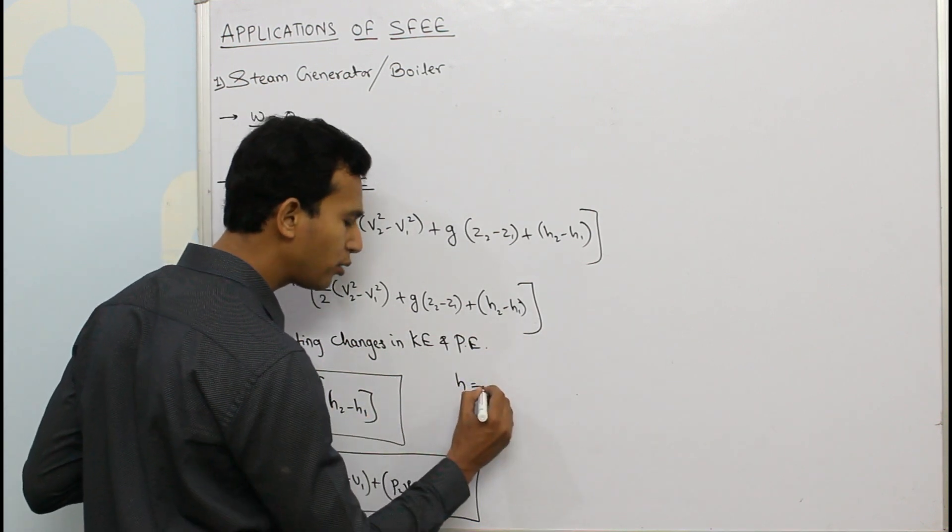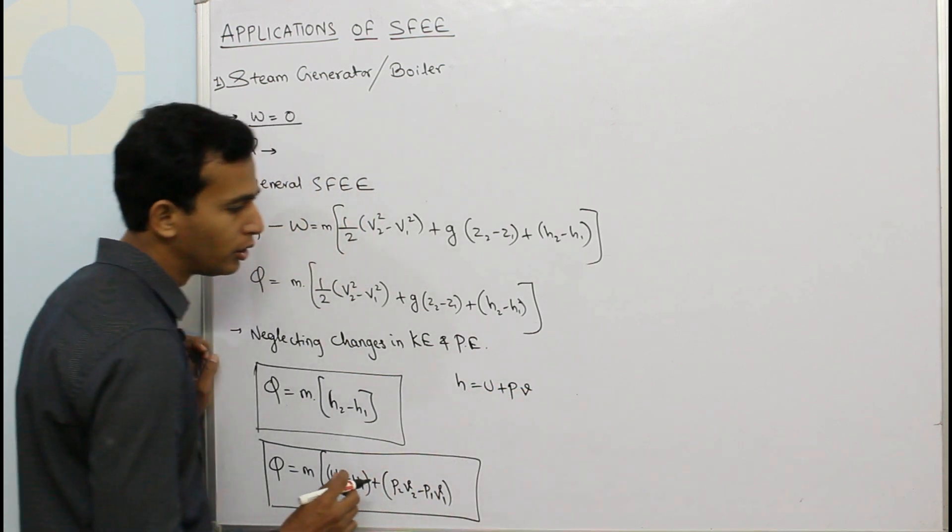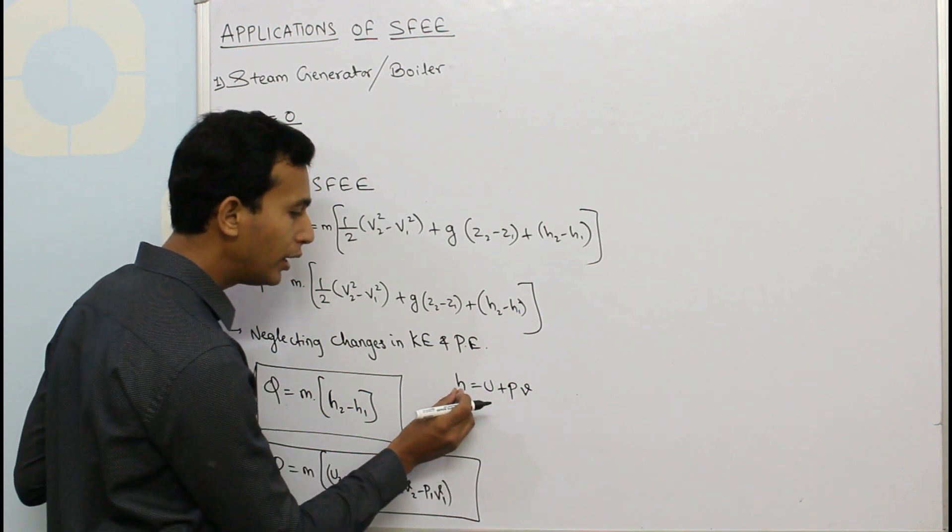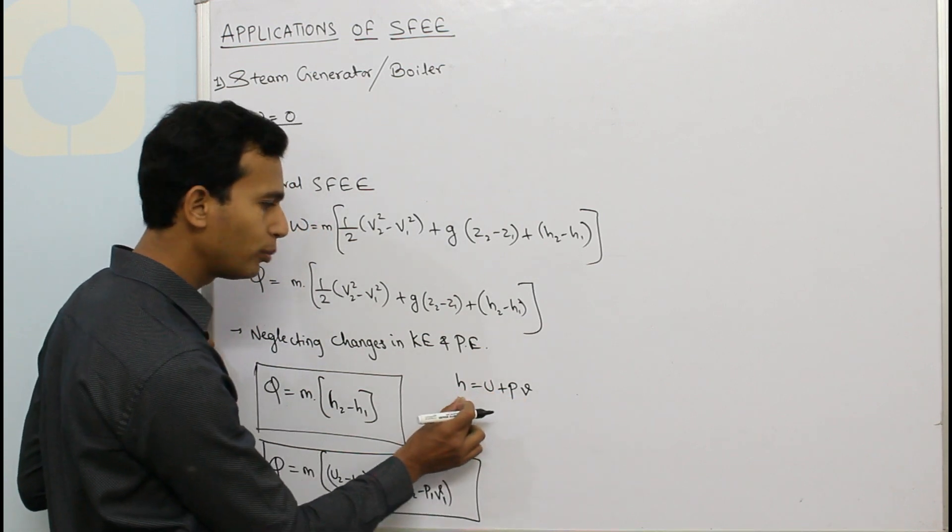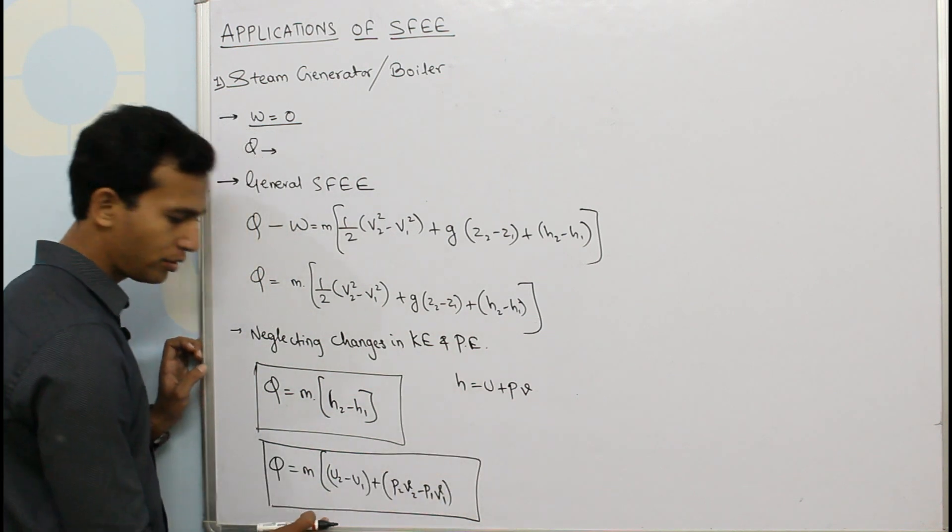So if you separate these two terms in terms of H, we are putting these two terms. So H₁ becomes U₁ plus P₁V₁, and H₂ becomes U₂ plus P₂V₂. So using these two terms, this is the equation—there is nothing different in this.